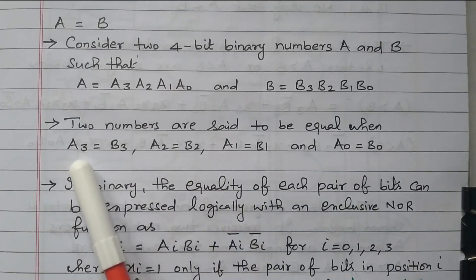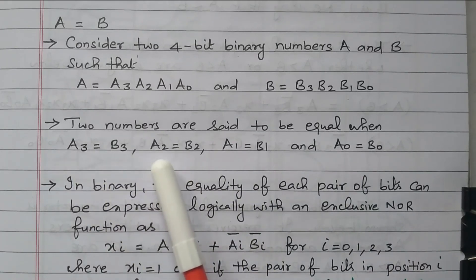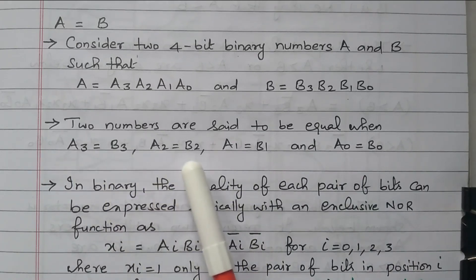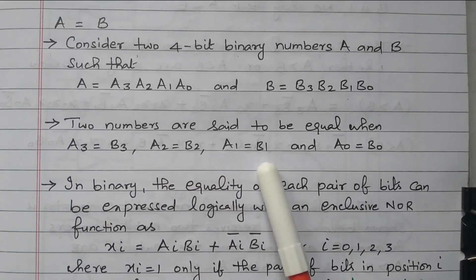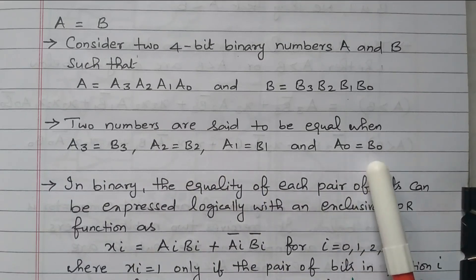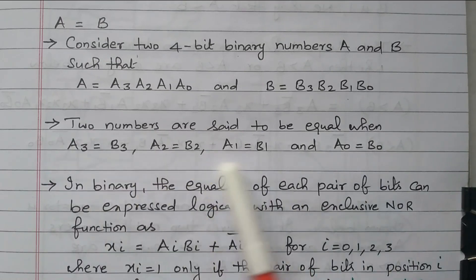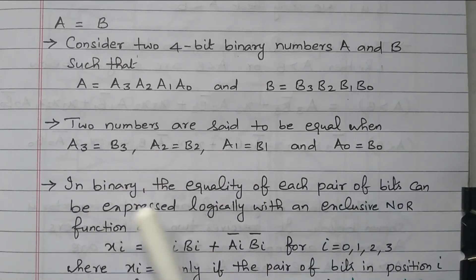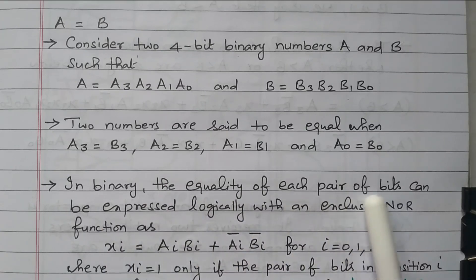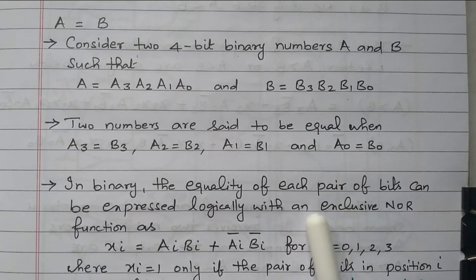The corresponding A3 and B3 should be equal. Similarly, A2 and B2 should be equal, A1 and B1 should be equal, and A0 and B0 should be equal. We need to satisfy all four conditions. In binary, the equality of each pair of bits can be expressed logically with the exclusive NOR gate, the exclusive NOR function.